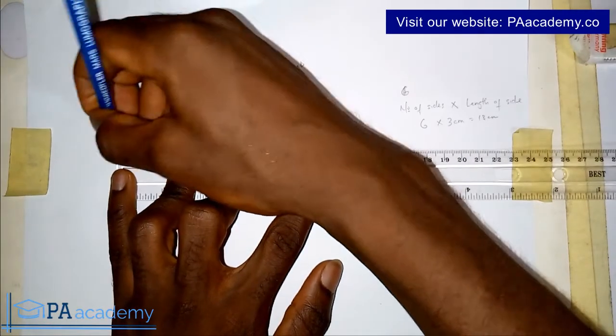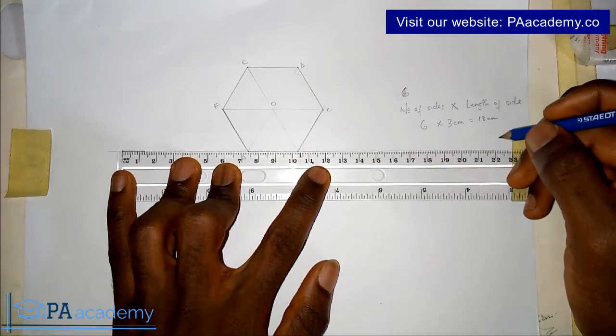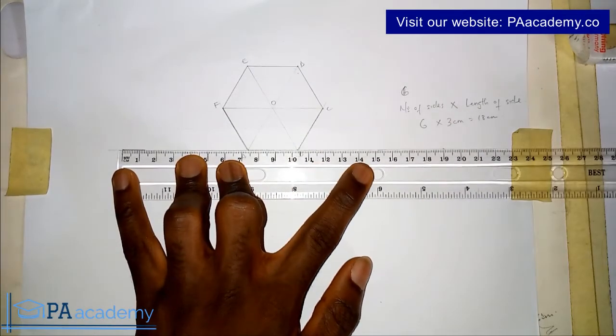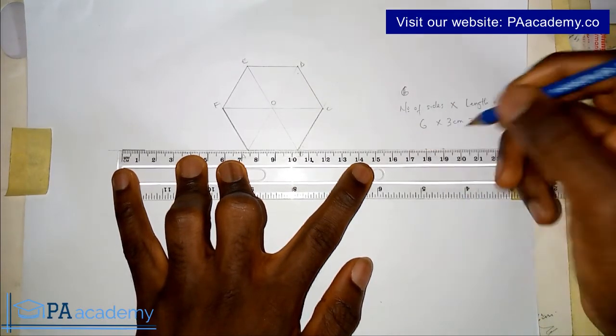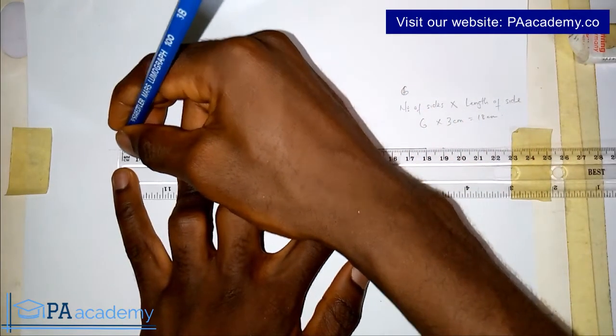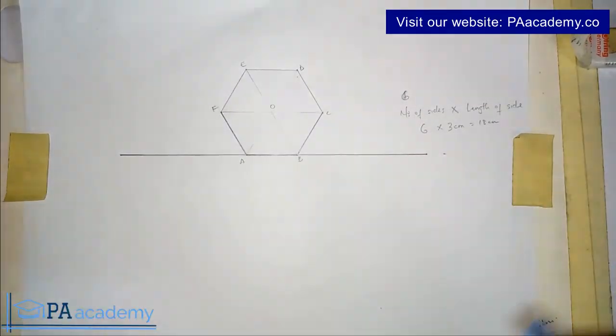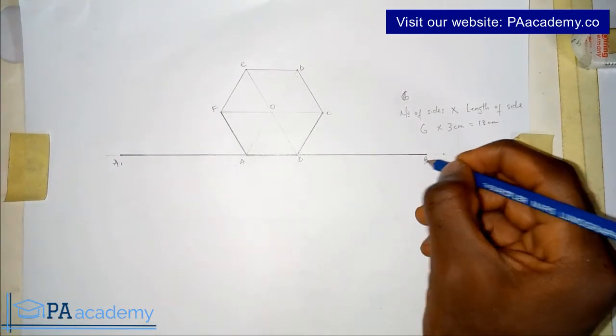So from this point to this point. So that is 18 cm rather. So this is 18 cm. So I will extend it to 18 cm. So let me call this point A1 and let me call this point B1.